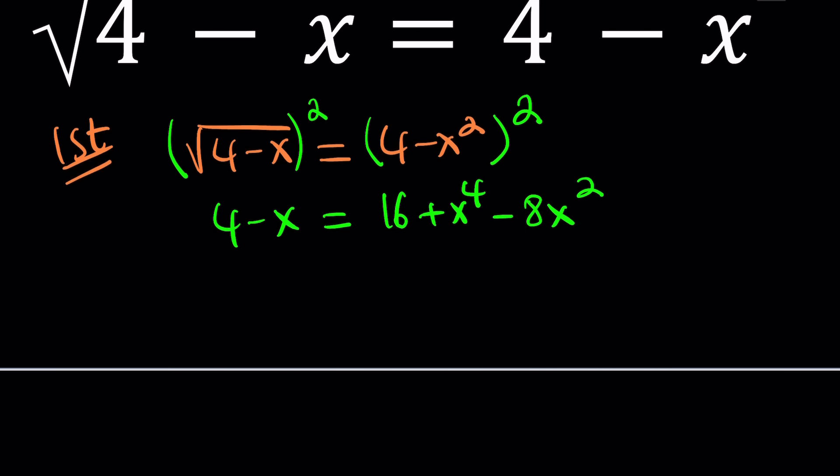And guess what? This becomes a quartic fourth power. Let's put everything on the same side. x to the 4th minus 8x squared plus x plus 12 equals 0. Awesome. Do you like that? Probably not.